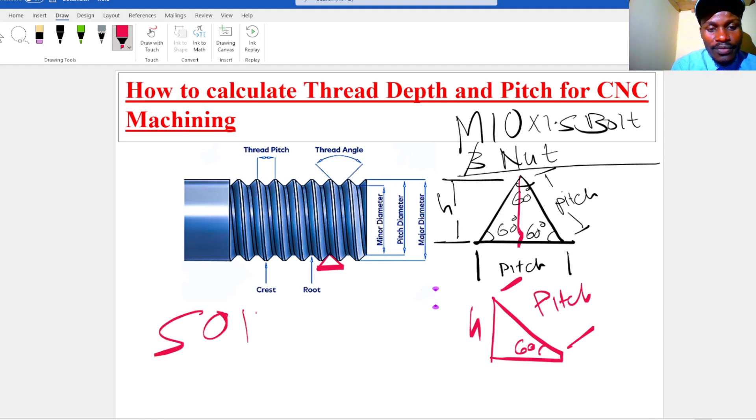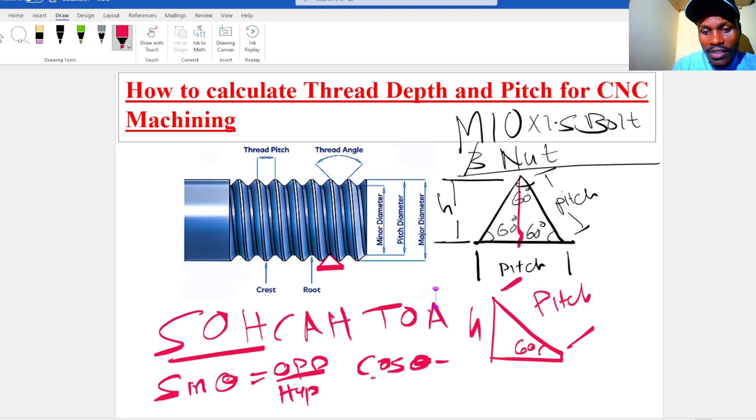The first one is sine of this angle: sine theta is the same as opposite over hypotenuse. The second one, cosine theta, is given by adjacent over hypotenuse. And the last one, tan theta, is given by opposite over adjacent.